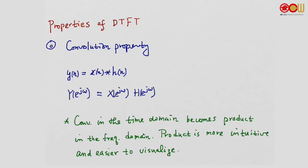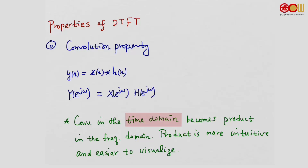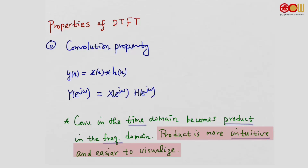We have defined Fourier transform, but why do we want to do that? We know for an LTI system, you have the impulse response, and for an arbitrary input, you can convolve with the impulse response and get the output. But why bother with the Fourier transform? One very important reason is the convolution property: when we have the convolution of x and h equal to y in the time domain, applying the Fourier transform gives Y = X · H — simply the product of the two. So convolution in the time domain becomes product in the frequency domain, which is much more intuitive and easier to visualize.